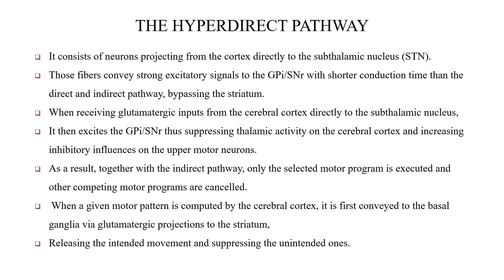The hyperdirect pathway consists of neurons projecting from the cortex directly to the subthalamic nucleus, conveying strong excitatory signals to the internal globus pallidus and substantia nigra with shorter conduction time than the direct and indirect pathways, bypassing the striatum. Receiving glutamatergic inputs from the cerebral cortex, it excites the internal globus pallidus and substantia nigra, suppressing thalamic activity on the cerebral cortex and increasing inhibitory influence on upper motor neurons. Together with the indirect pathway, only the selected motor program is executed and competing motor programs are cancelled.